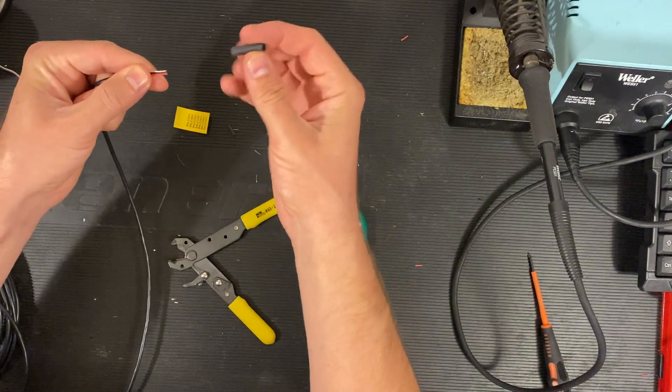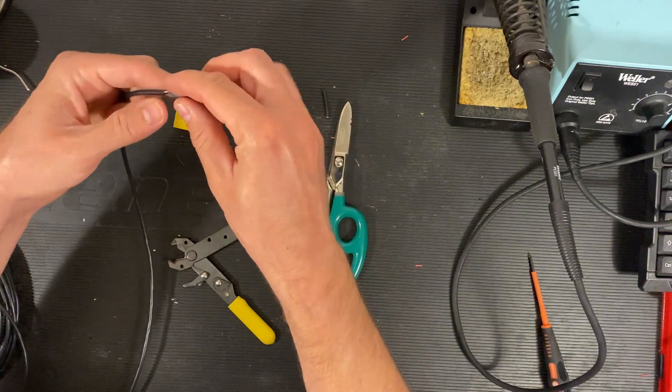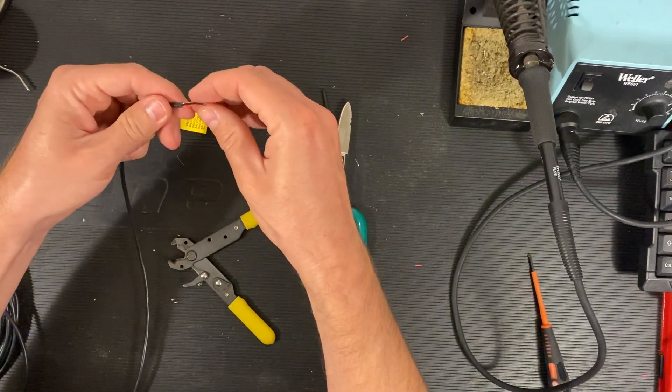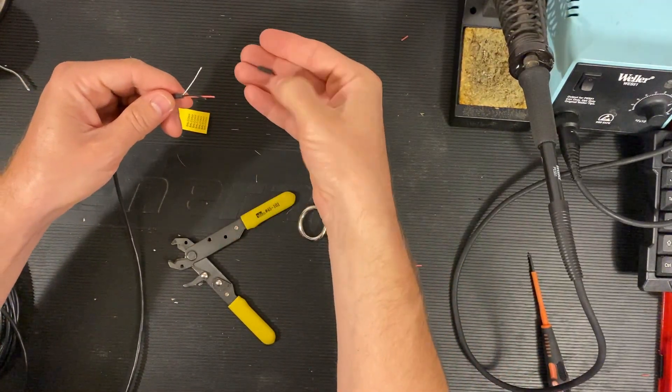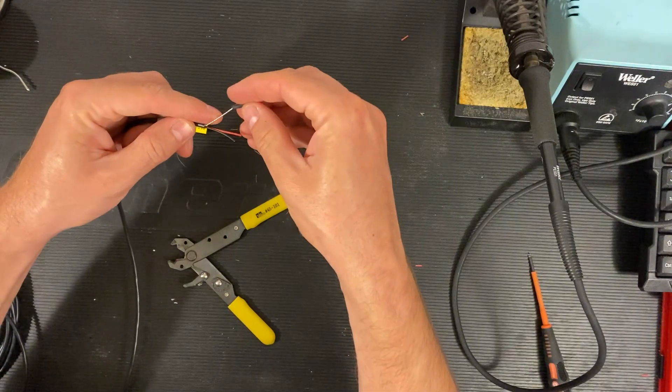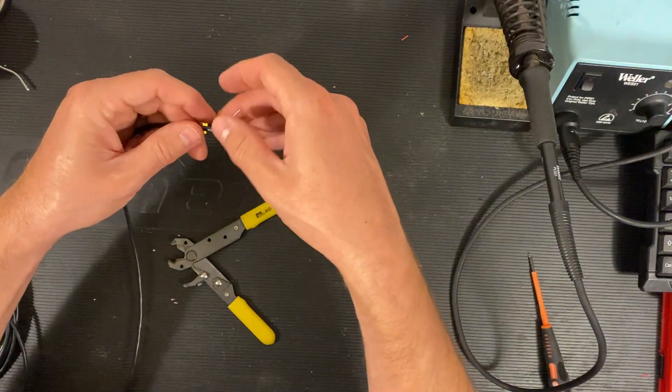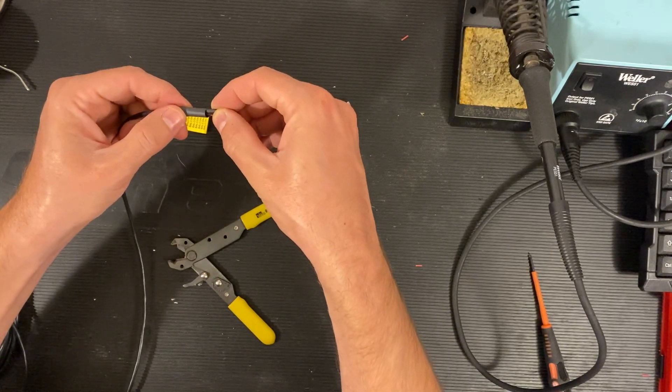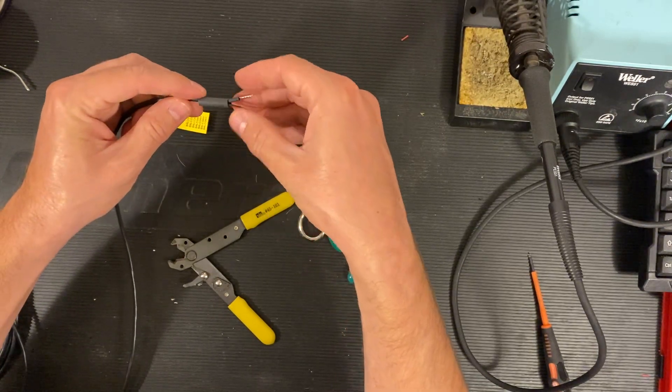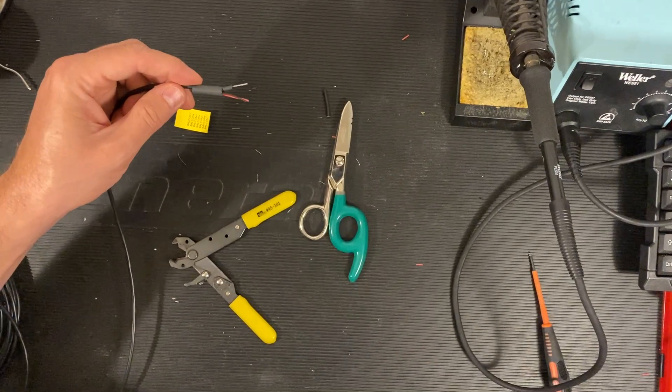We take about an inch long piece of heat shrink and slide it over the conductors. We take a 1/16 inch heat shrink and slide it over the drain wire, and then we bring the large heat shrink back up to where it overlaps the inner conductors by about an eighth of an inch.